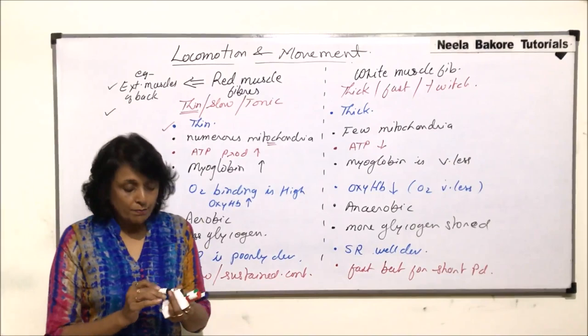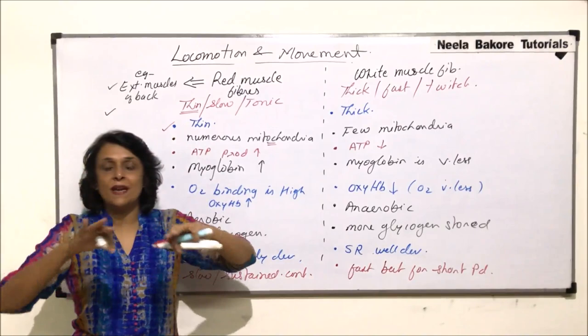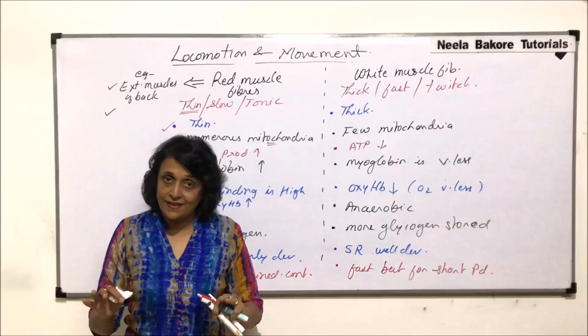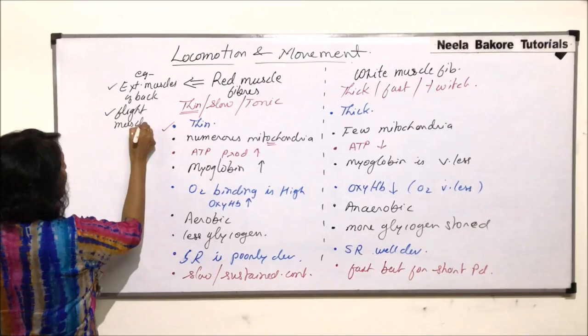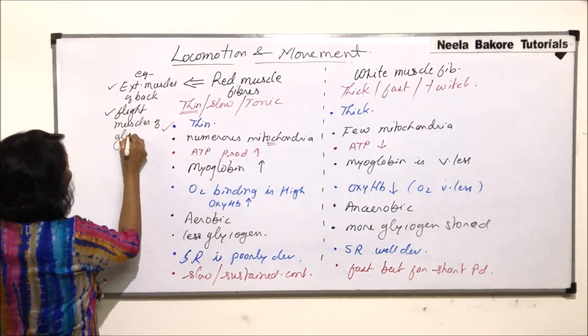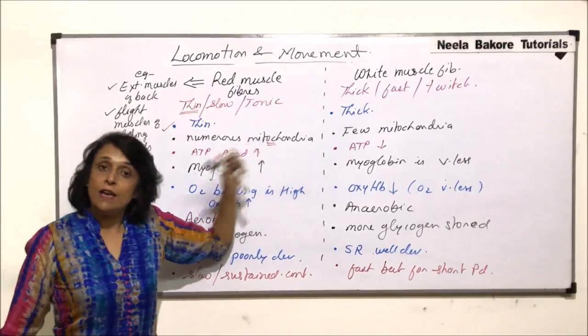The second example for red muscle fibers is the flight muscles of gliding birds, such as vultures or eagles. These birds glide in the air for a long period of time — their wings remain spread out, meaning the muscles are in a contracted state for a very long duration. So the flight muscles of gliding birds are composed of red muscle fibers.